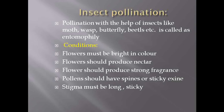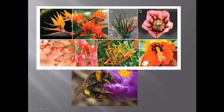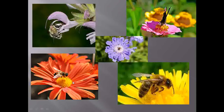Moving towards biotic agencies, the first one is insects. Pollination which takes place with the help of insects like moths, bees, butterflies, or beetles is called entomophily. As this is a type of biotic agency, the flower should be bright in color, the flower should produce nectar, it should be large, attractive, and produce a particular type of fragrance. Flowers are big so that insects can easily land on them.